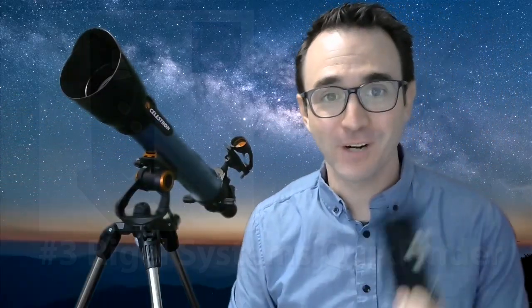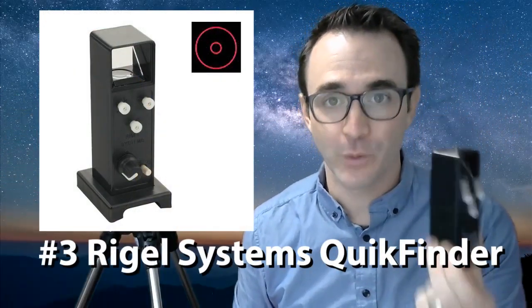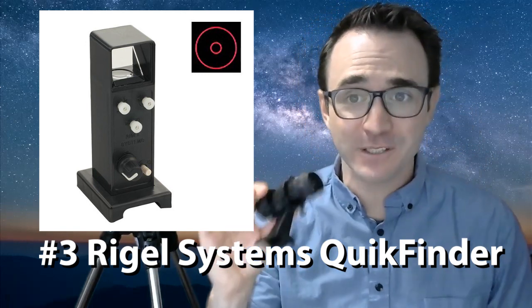Number three, upgrade your finder to the Rigel Quick Finder. If you're like me, you absolutely hate finder scopes. You push the telescope one way and the image goes the other, or maybe you have one of these little red dot finders that come with your telescope, but you quickly realize that it's kind of shaky and doesn't always stay in the same spot. You even have to press your head up against the telescope just to use it.